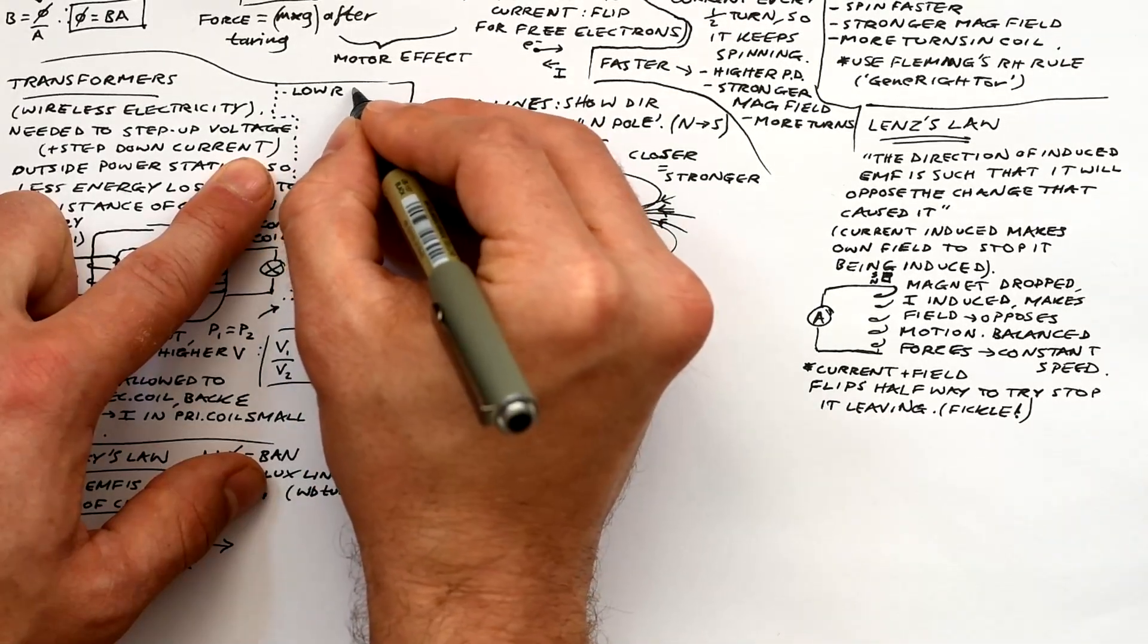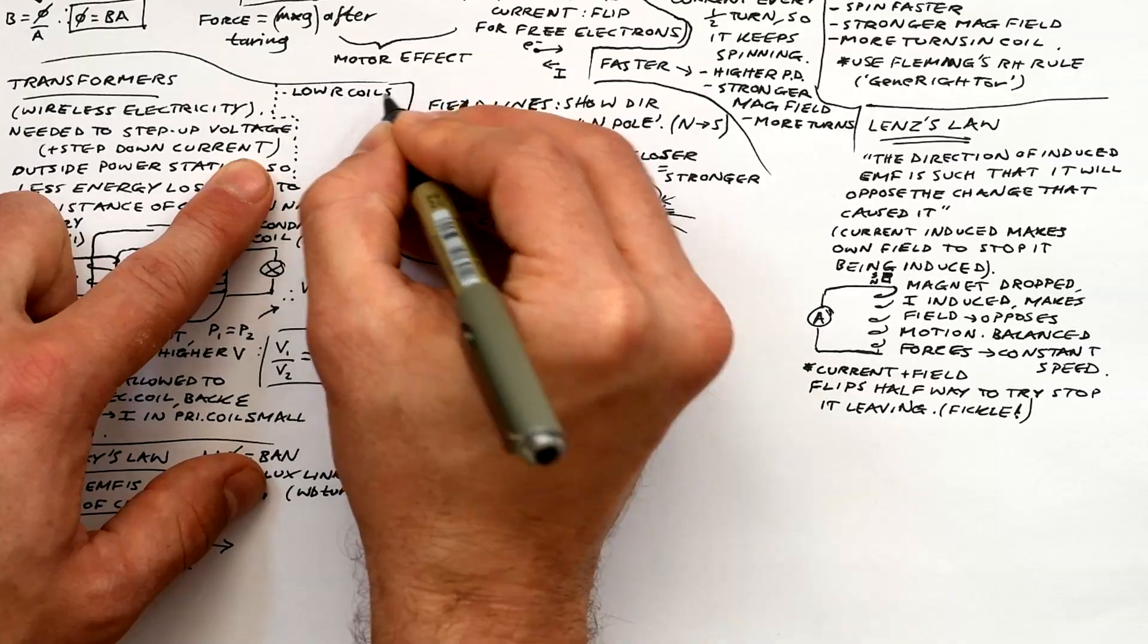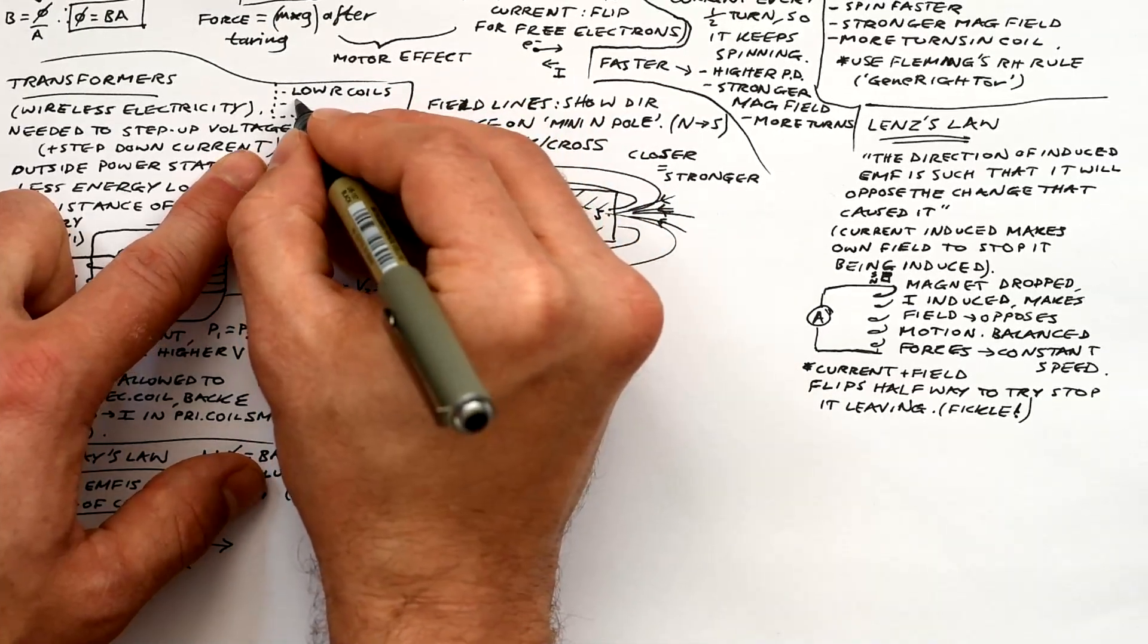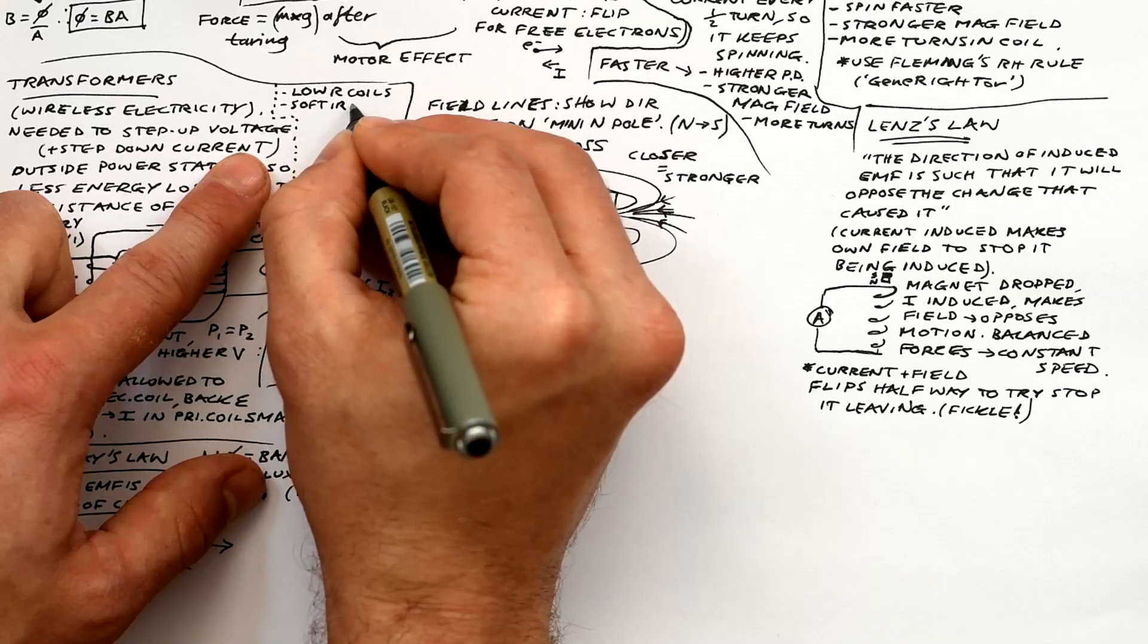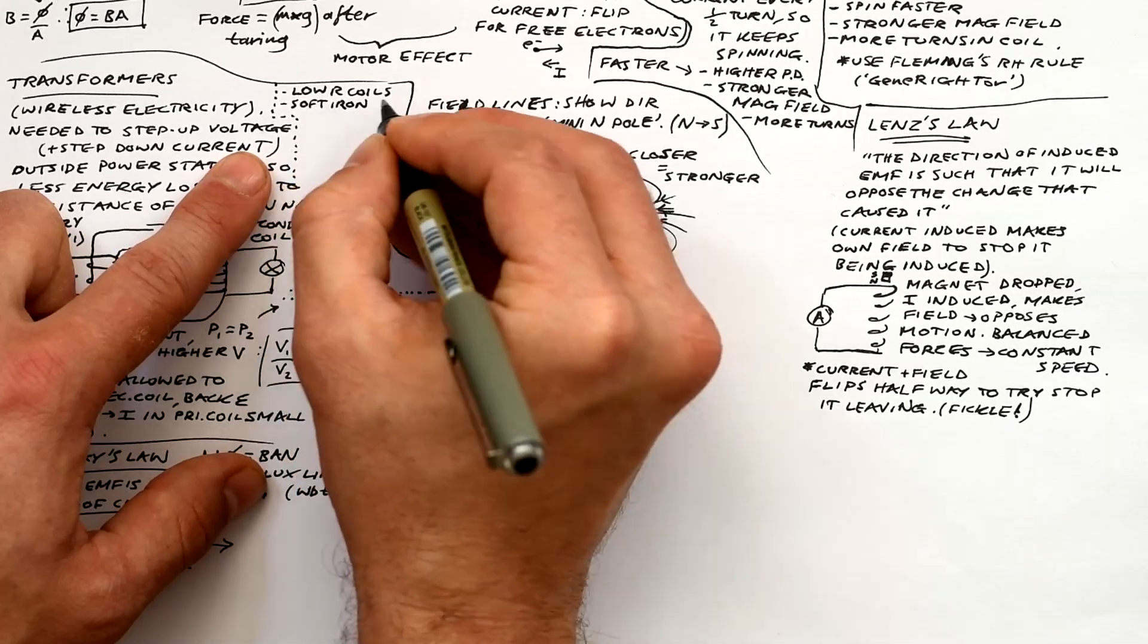So here's something that counts for GCSE as well. There's three things that you can do to reduce energy losses in a transformer. Number one, you can use low resistance windings for the coils. So just low resistance wires, copper.